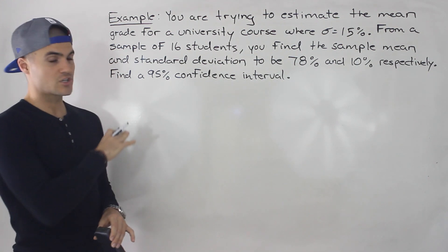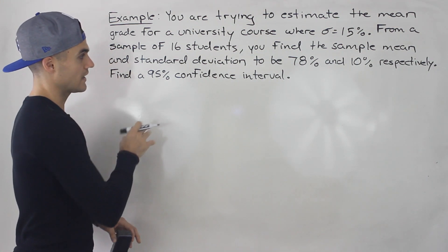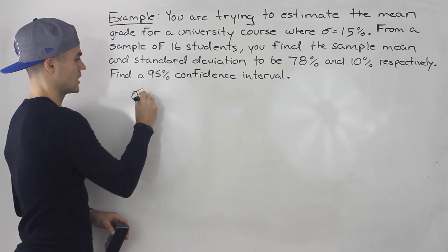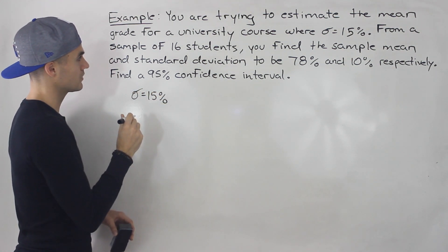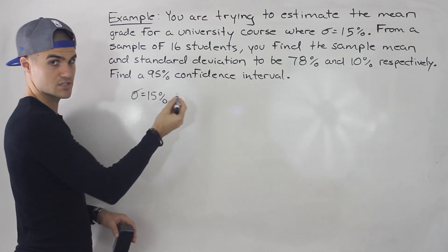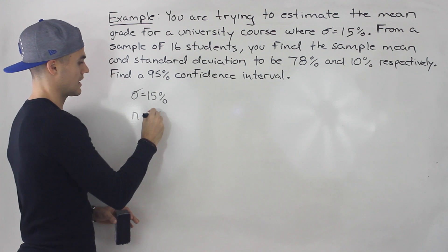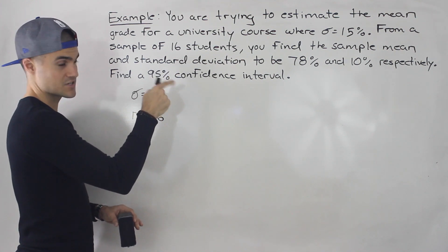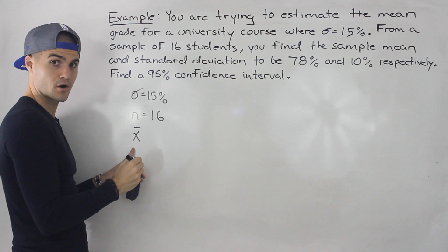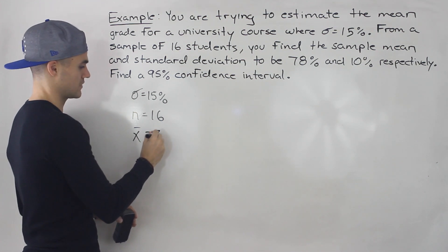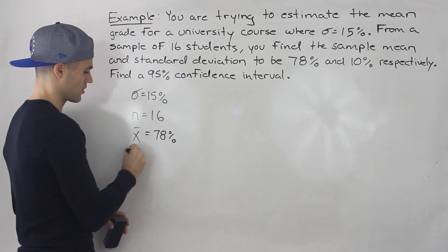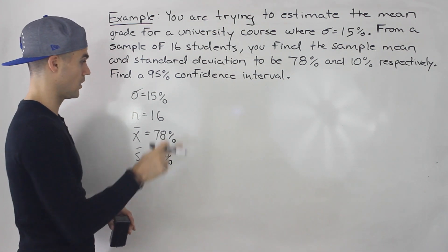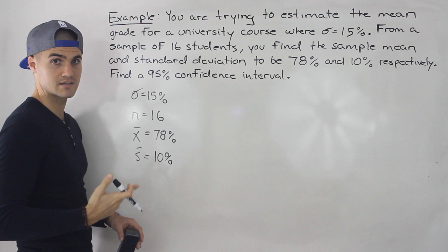When I get a question like this, the first thing I like to do is write out all the information, all the parameters I'm given. We're given the population standard deviation, which is 15%. Our sample size n is 16. X-bar represents the sample mean, which is 78%. And S represents the sample standard deviation, which is 10%. So notice in this case we're given both the population standard deviation and the sample standard deviation.